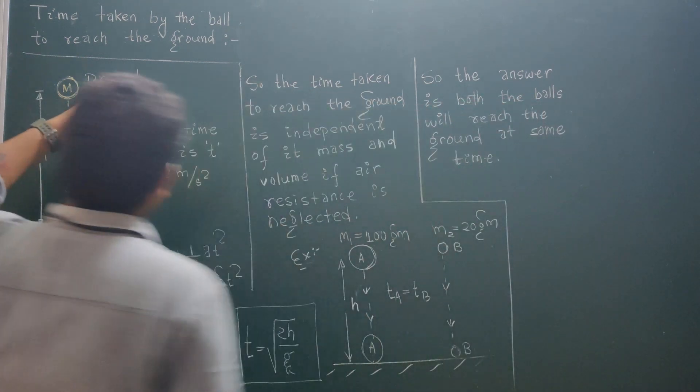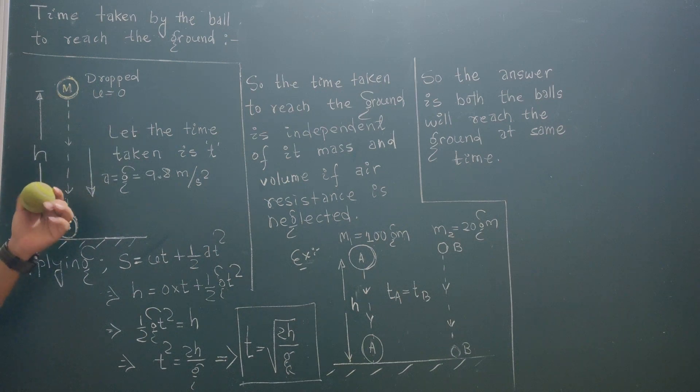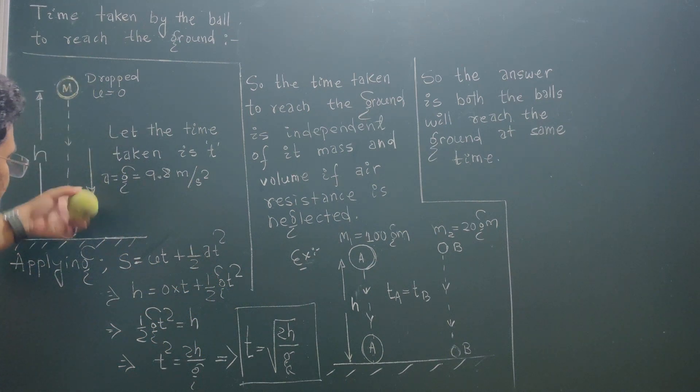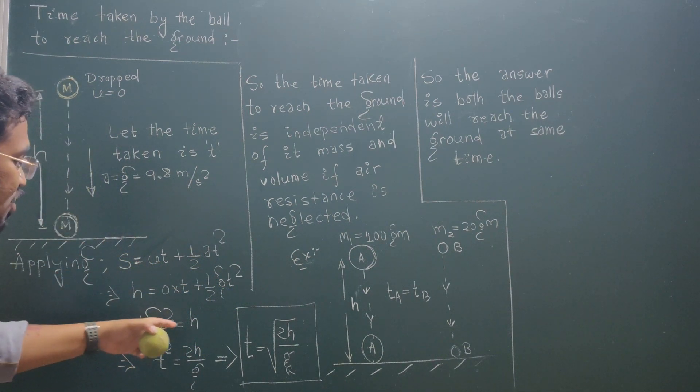Let the time taken by the ball to reach the ground be t. Applying the kinematic equation s = ut + (1/2)gt². Here the displacement of the ball is h, and since u = 0, we get h = (1/2)gt².